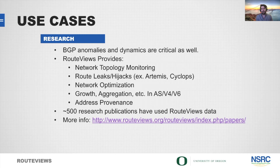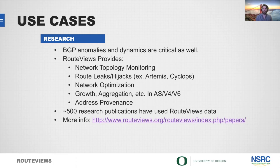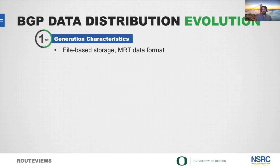Research is a big part of what continues to help Route Views maintain its presence on various exchanges. One of the big areas we've seen recently is BGP anomaly detection — covering RPKI, route leaks, and BGP hijacks, all very interesting from a research perspective. We also see a lot of research into network optimization, growth, aggregation on both v4 and v6, and address provenance. There are roughly 500 research publications that have used Route Views data.